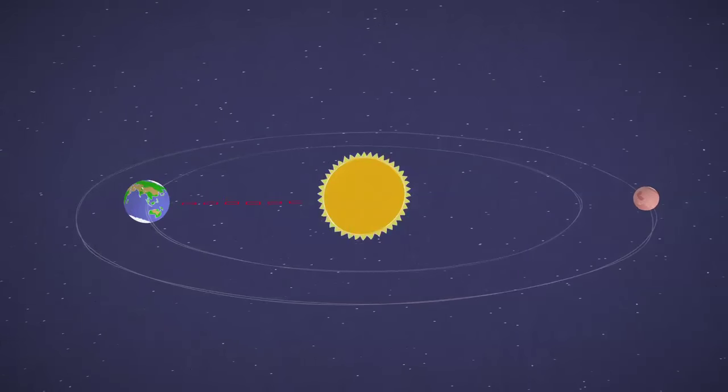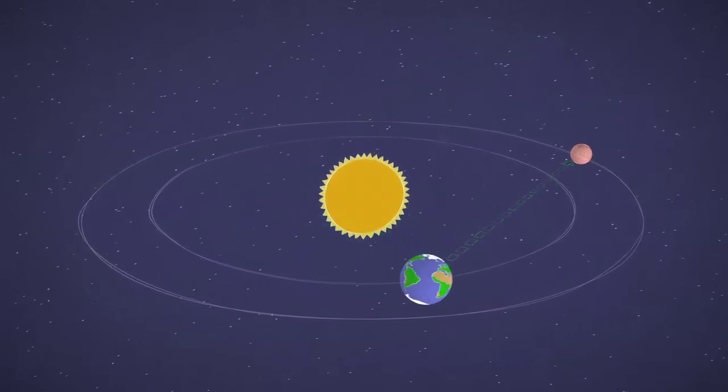Solar conjunction lasts just a few weeks. Then it's back to the grindstone, on Earth and on Mars.